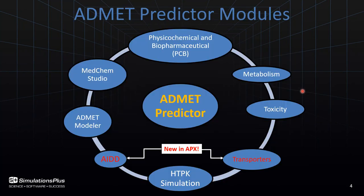This slide gives an overview of the eight modules in AdMet Predictor X. There's the physical, chemical, and biopharmaceutical module, the metabolism module, and the toxicity modules, all in AdMet Predictor 9.5. Our new module is called the transporters module. All of these modules are made up of artificial neural network ensemble models. Some are classification models, others are regression models, and there are also atomic models that use atomic descriptors, such as our pKa and sites of metabolism models.